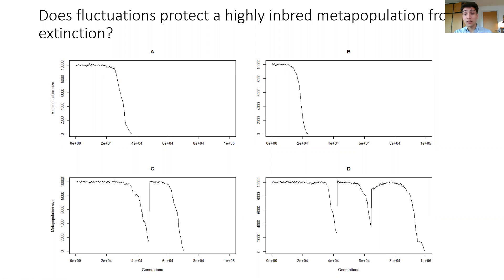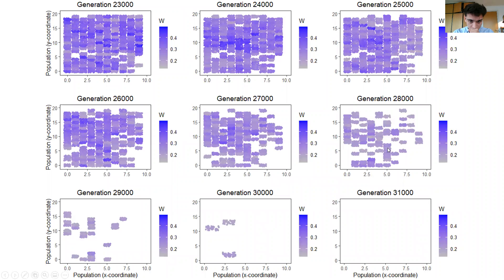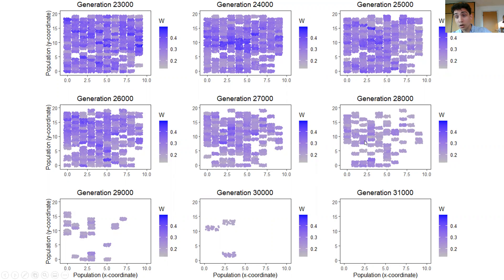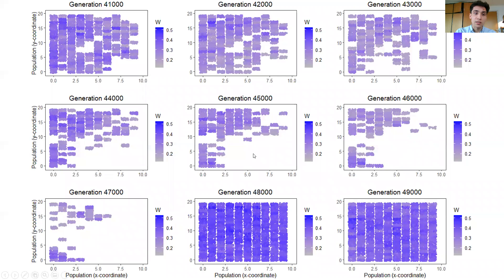Why are these fluctuations correlated with an increased persistence time? The standard pattern is a population slowly dying out because of a decrease in fitness brought about by the accumulation of deleterious mutations until it suddenly goes extinct. And you can have a population that, just before dying out, will recolonize itself, and as you can see, this recolonization is correlated with an increase in mean fitness — the color becomes more deep blue, indicating an increase in fitness.